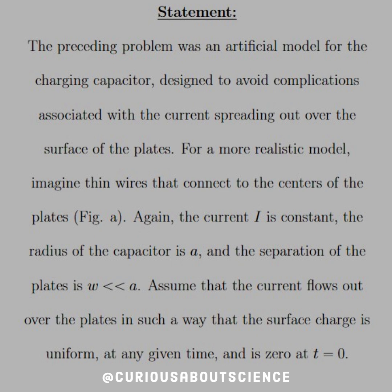the preceding problem was an artificial model for the charging capacitor designed to avoid complications associated with the current spreading out over the surface of the plates. For a more realistic model, imagine thin wires that connect to the centers of plates shown in figure A. Again, the current I is constant, the radius of the capacitor is a, and the separation of the plates is w much much less than a. Assume that the current flows out over the plates in such a way that the surface charge is uniform at any given time and that is zero at t equals zero.